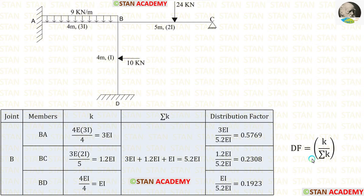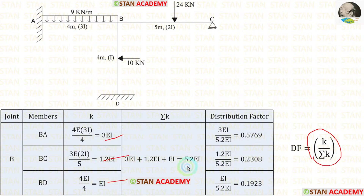The formula for the distribution factor is K/ΣK. We have found the K values and ΣK. We can apply the values inside the formula and find the distribution factors.